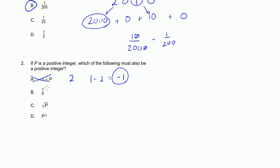1 over P. Well, once again, I'm just picking 2 at random. It's a positive integer. If P is 2, then 1 over 2 is not a positive integer. So it can't be B. Let me cross that out.